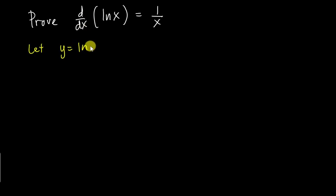We know ln basically means log base e, isn't it? So if I move the ln to the other side, I actually get e^y equals to x.